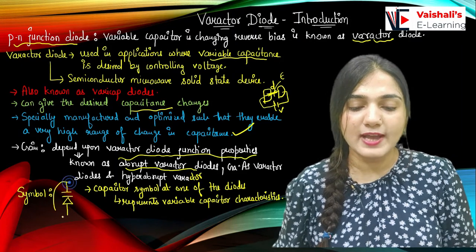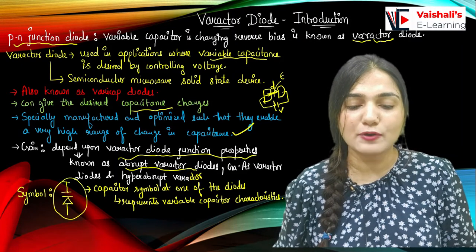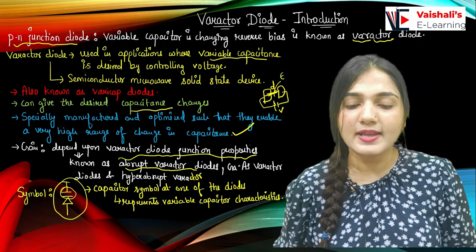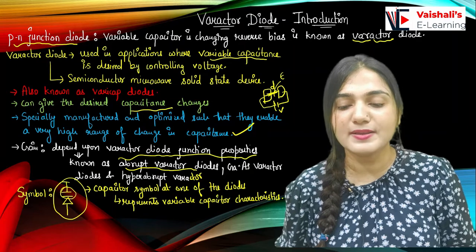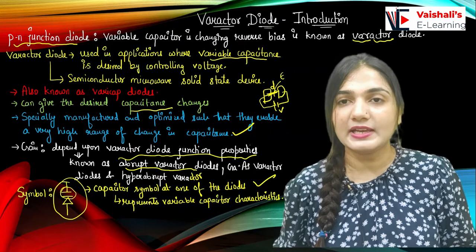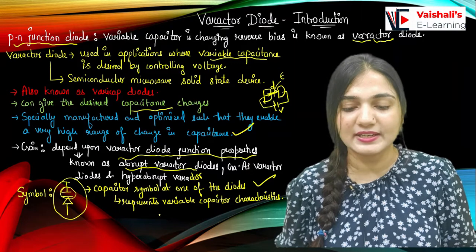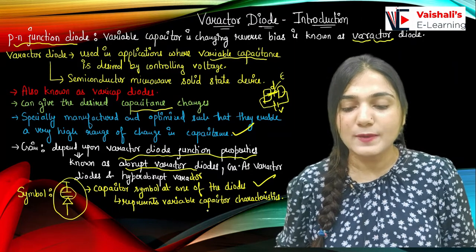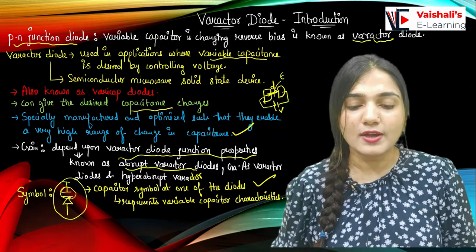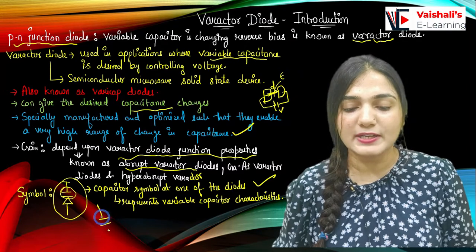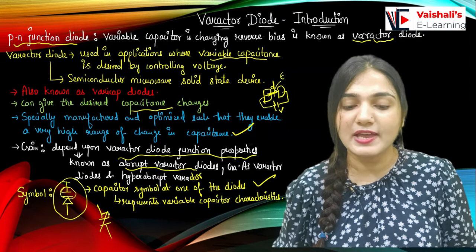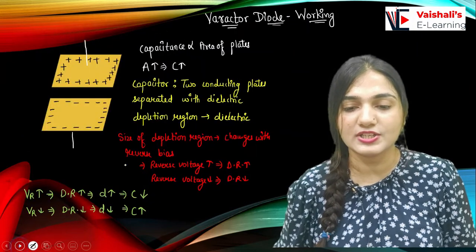Looking at the symbol: we have a diode, and above it we have a capacitor symbol. The symbol denotes the capacitor symbol at one end of the diode, indicating that this diode is used as a capacitor. It represents variable capacitor characteristics — the capacitance is not a fixed value but a variable one whose value changes with voltage.